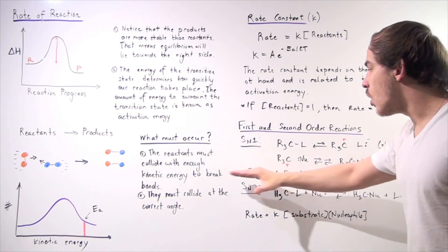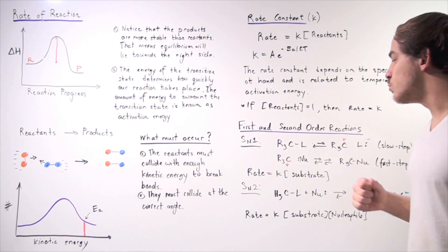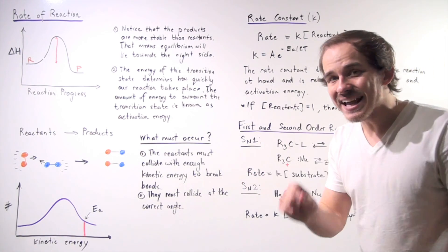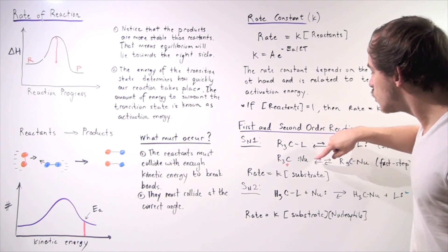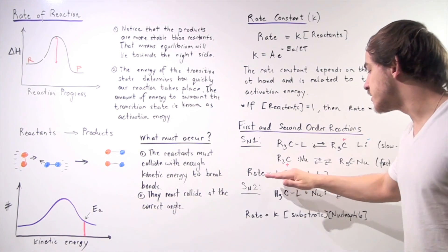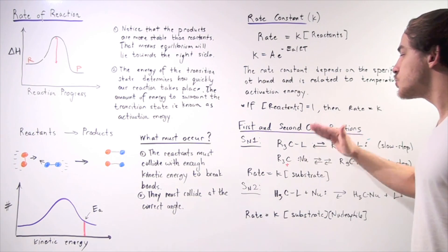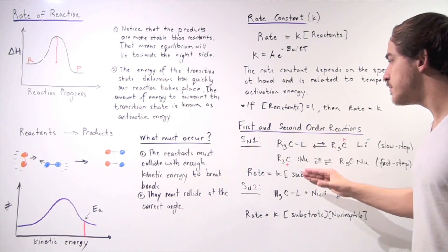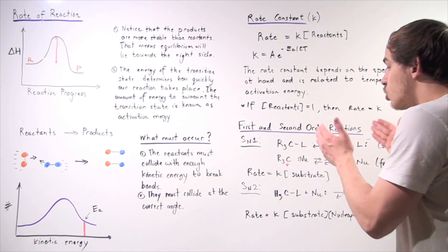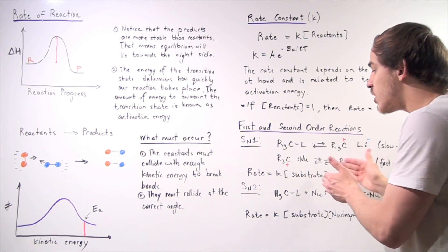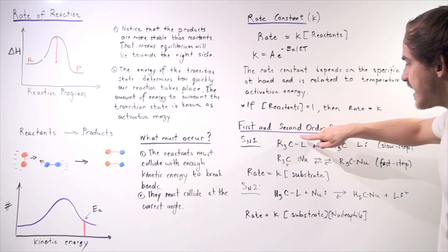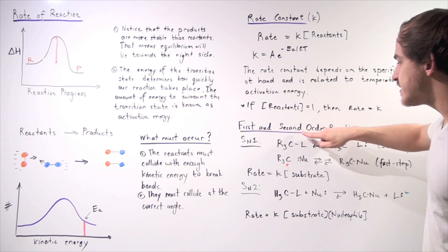When we wrote our rate law for the SN1 reaction, we saw that our rate is independent of the nucleophile concentration — it only depends on our substrate. This is known as the first-order reaction, because only one concentration goes into our rate law: K times the concentration of substrate.